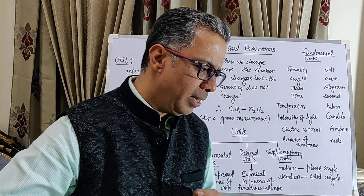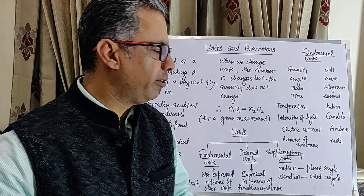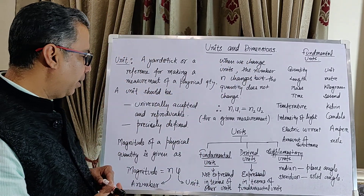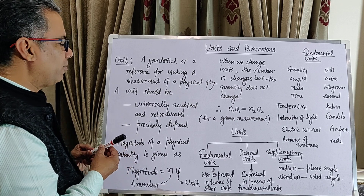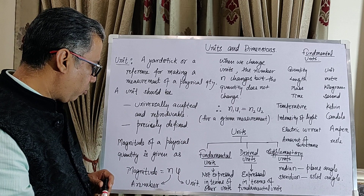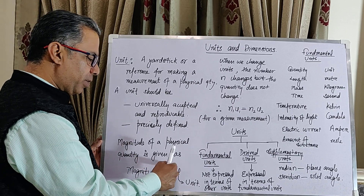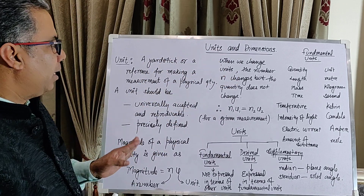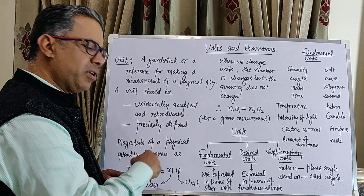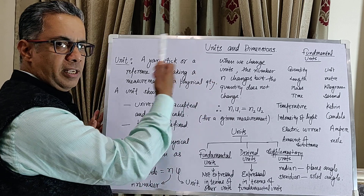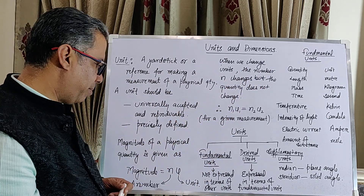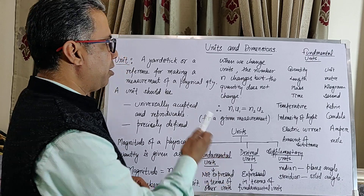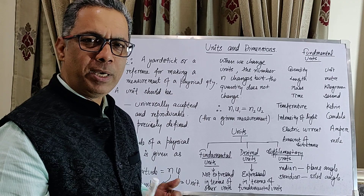When we make a measurement, it always involves expressing a length or any quantity as a number times a unit. For instance, the length of the board was seven times the marker pen, where marker pen was the unit. So whenever we express a measured quantity, it is always expressed as a number — in this case seven — and a unit — in this case the marker pen.